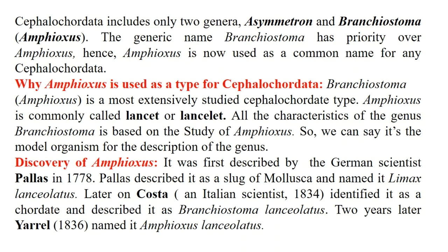The generic name Branchiostoma has priority over Amphioxus, so Amphioxus nowadays is used as a common name for any cephalochordate. If you are describing Amphioxus then you can also describe Cephalochordata on the basis of that description. So Amphioxus is used as a type for Cephalochordata and is the model organism for the description of the genus.